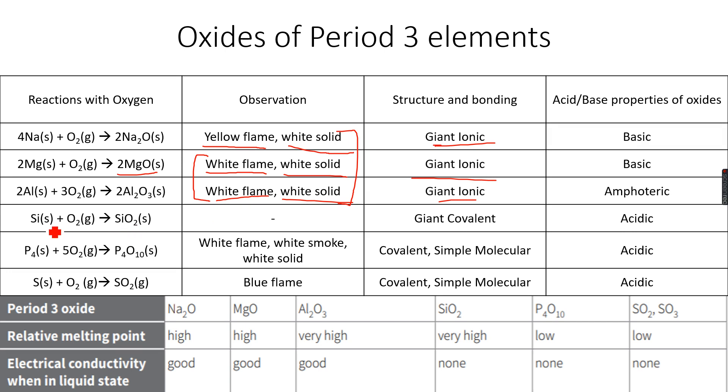For silicon, we get silicon dioxide, which has a very high melting point. We don't need to know the observation, it's not in our course. It's actually a white solid, so you can write white solid if you want to, but you don't need to remember. Then for phosphorus, we get P4O10.